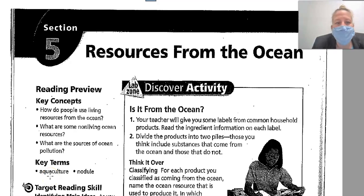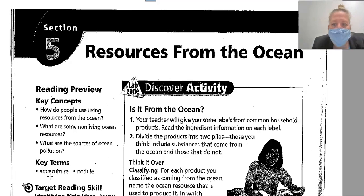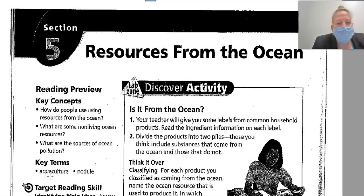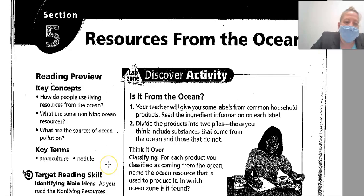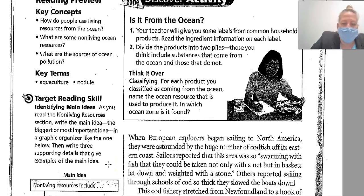Welcome to chapter 4, section 5. This is our last reading from the ocean's chapter — resources from the ocean. Today we're going to talk about how people use living resources from the ocean, what are some non-living ocean resources, what are the sources of ocean pollution, and we'll talk about aquaculture and nodules.